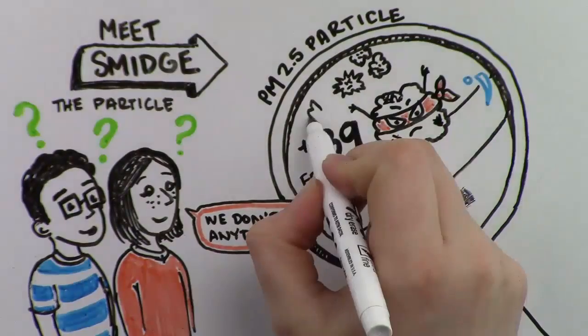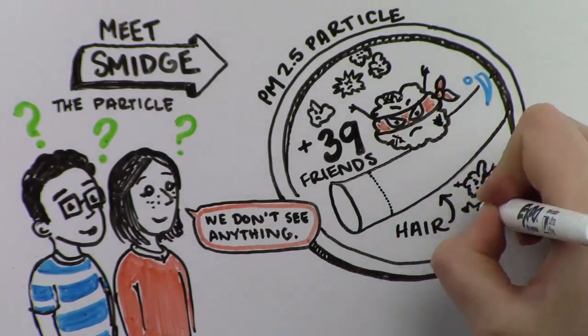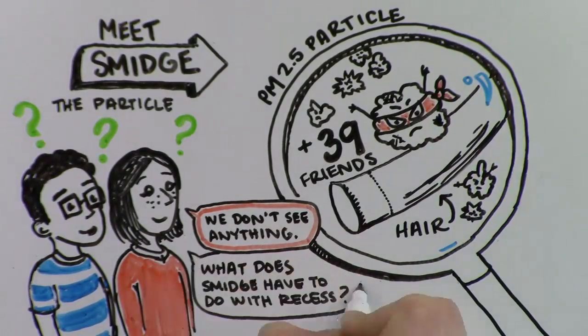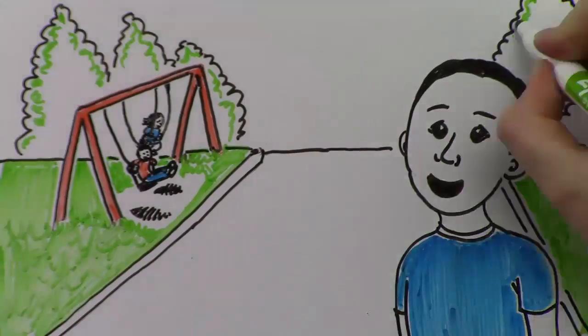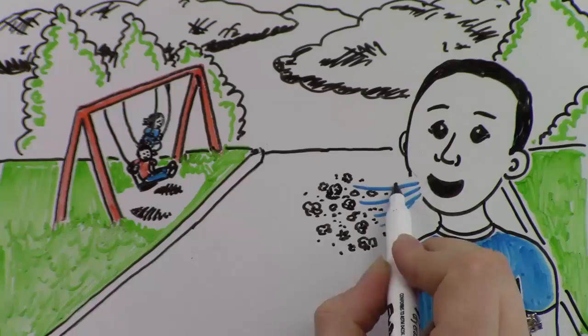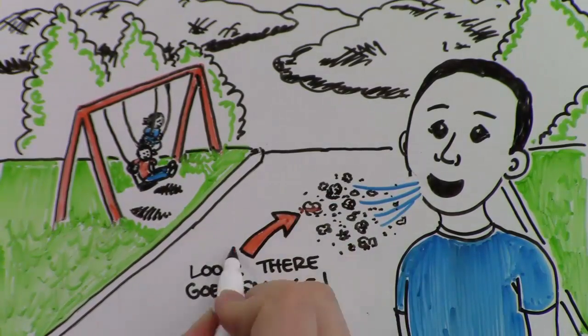Wow! So what does Smidge have to do with recess? While you're playing outside, you're breathing in pollution that's been trapped in the valley. Look, there goes Smidge! Let's follow him.